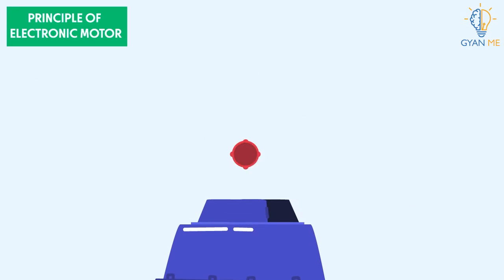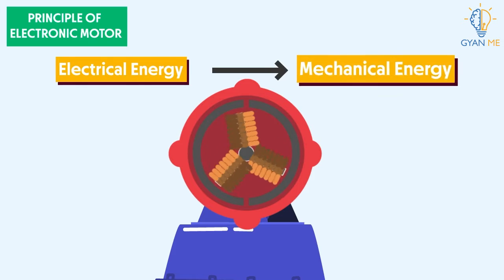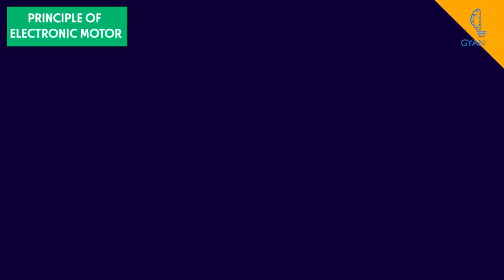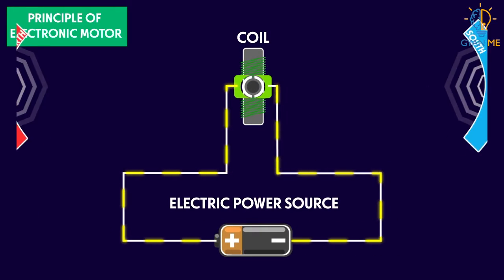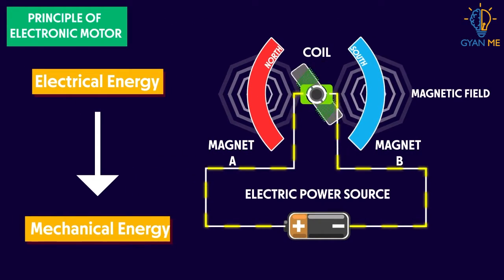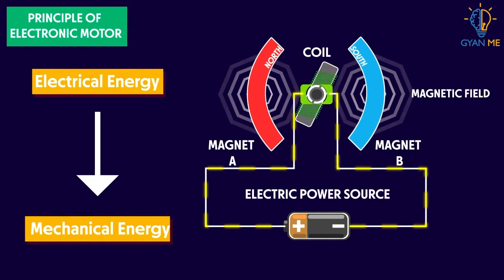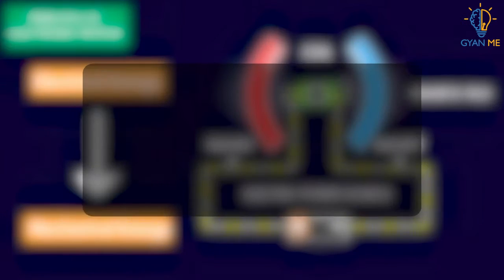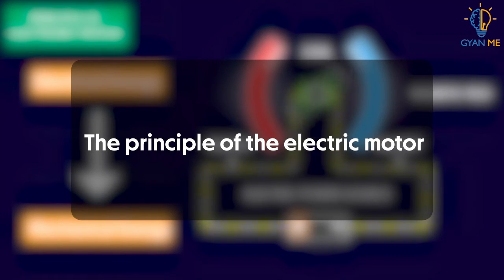An electric motor is a rotating device that converts electric energy to mechanical energy. If you place a current carrying coil in a magnetic field, the field will exert a mechanical force on the coil. This force causes the coil to spin. Thus, conversion of electric energy into mechanical energy happens. This is the principle of the electric motor.